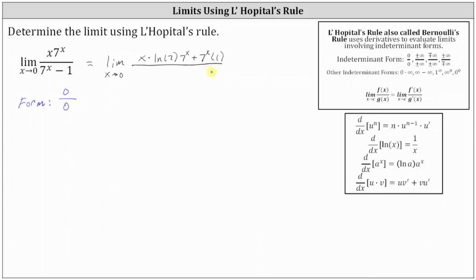Now we divide by the derivative of seven to the power of x minus one. The derivative of seven to the power of x is natural log seven times seven to the power of x, and then minus the derivative of one, which is zero.